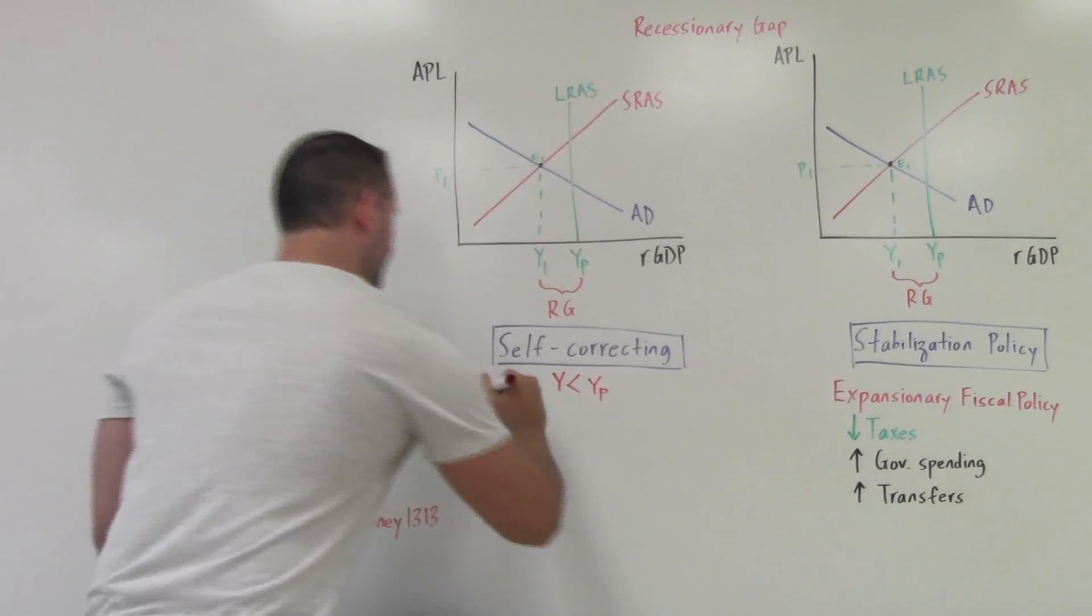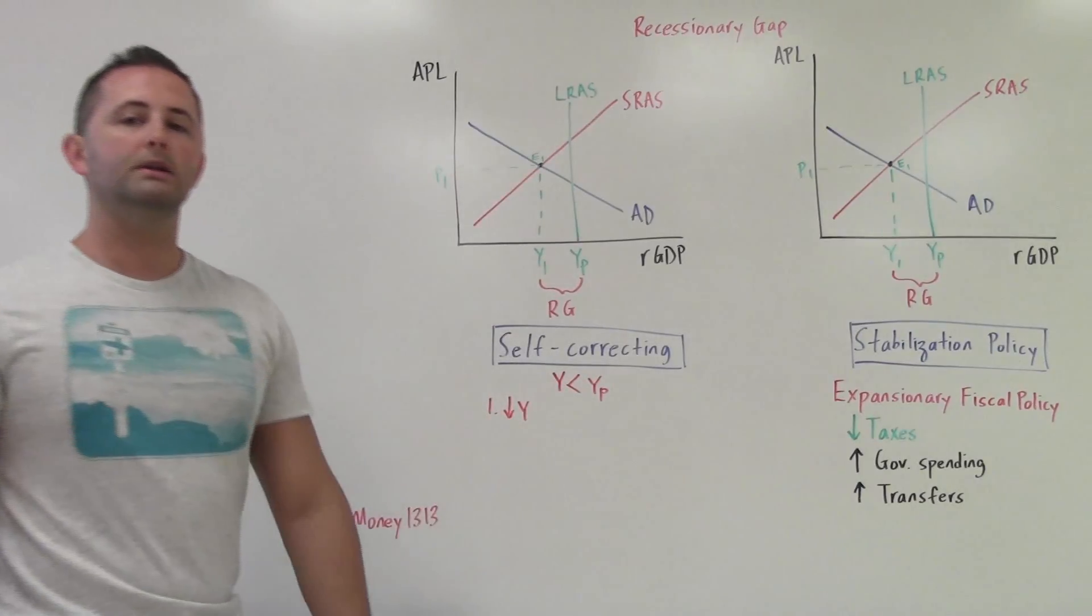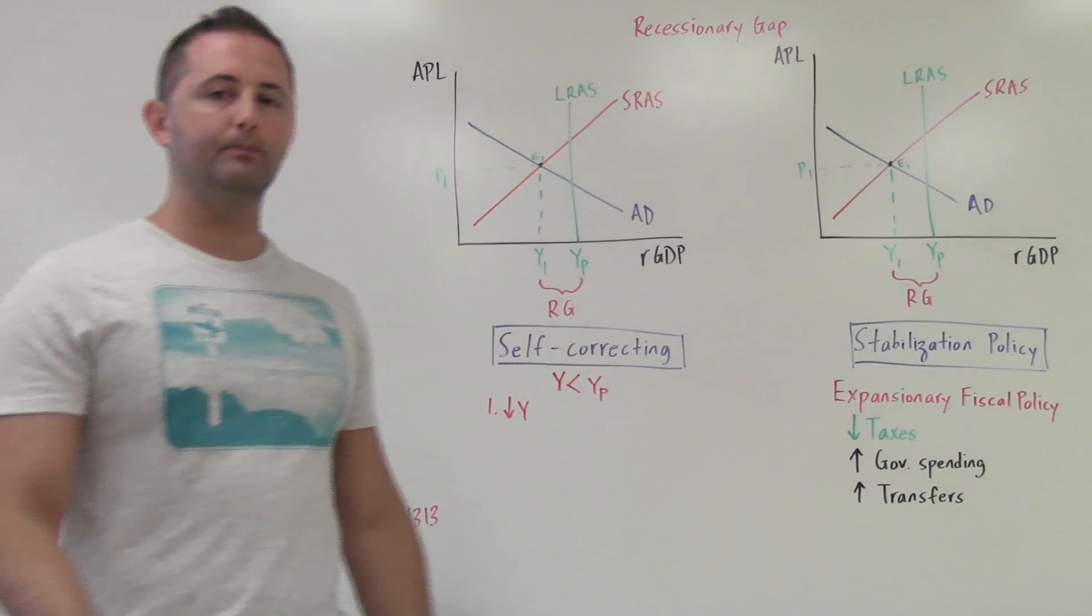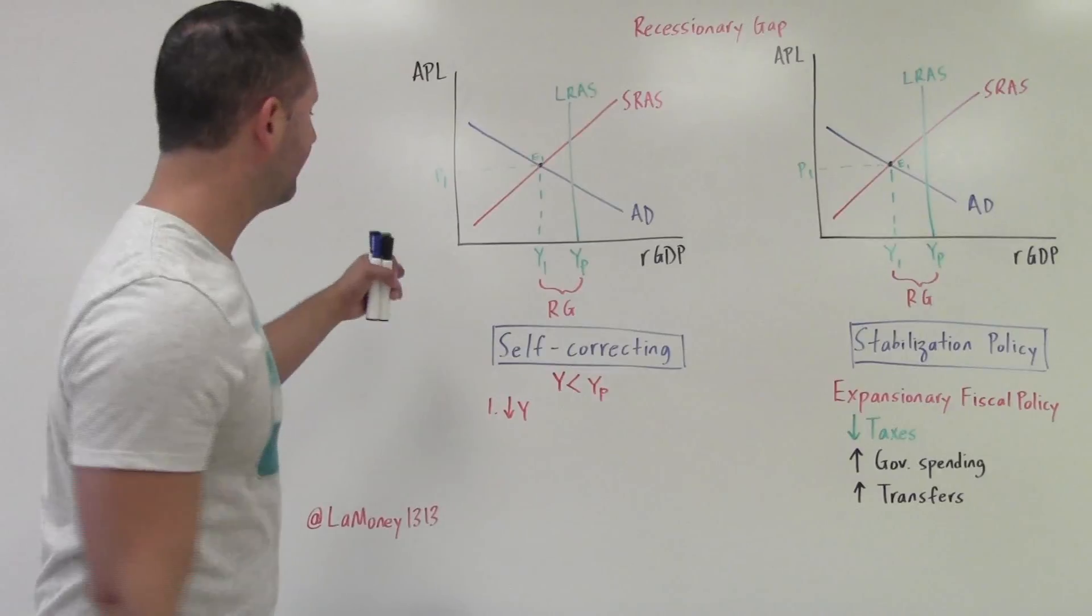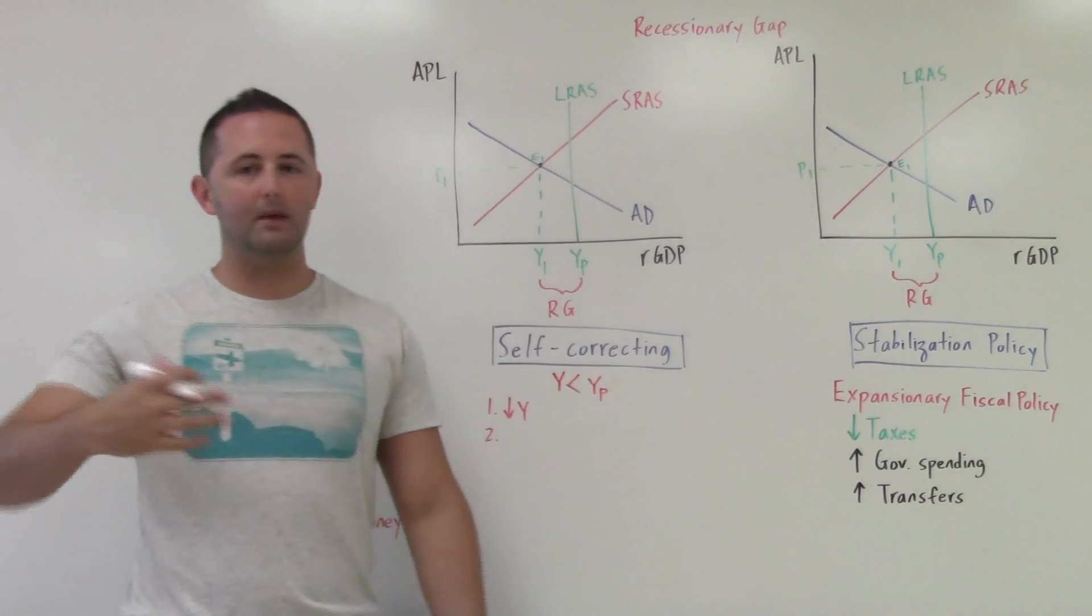So step one is that we have low output or falling output. So when we have falling output, what's going to happen? What will be the effect of falling output on jobs? Think about it logically.